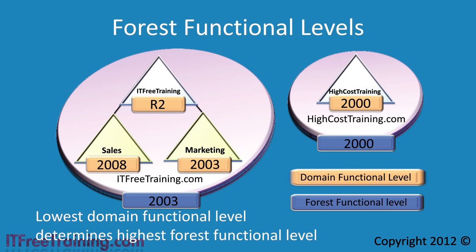On the high cost training forest, I have a Windows Server 2000 native domain and a Windows Server 2000 forest. In order to raise the forest level to Windows Server 2003, I need to first raise the domain level to Windows Server 2003. To do this, I first need to upgrade all the domain controllers in the high cost training domain to Windows Server 2003. Once done, I can raise the domain functional level to Windows Server 2003. Now that all domain functional levels in the high cost training forest are Windows Server 2003, I can raise the forest functional level. Now that both forests are at the Windows Server 2003 forest functional level, I can put in place a forest trust between the two forests, allowing easy resource sharing.